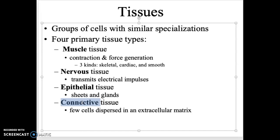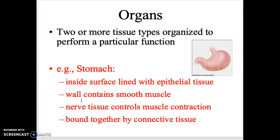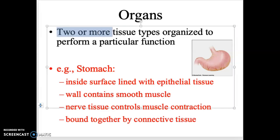Connective tissue is basically everything else. Organs are two or more tissue types forming a specific function. For example, in the stomach we have epithelial tissue lining it, smooth muscle within it, nervous tissue that tells the muscles when to contract, and connective tissue that holds everything together. Most organs include all four types of tissue, but you only need two or more to be classified as an organ.